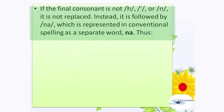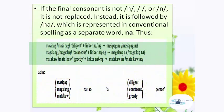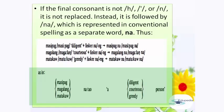If the final consonant is not h, glottal stop, or n, it is not replaced. Instead, it is followed by na, represented in conventional spelling as a separate word 'na.' For example: 'masipag' (diligent) + linker = 'masipag na'; 'magalang' (courteous) + linker = 'magalang na'; 'matakaw' (greedy) + linker = 'matakaw na.' As in: 'masipag na tao' (a diligent person), 'magalang na tao' (a courteous person), 'matakaw na tao' (a greedy person).